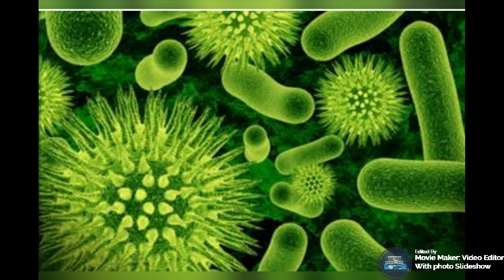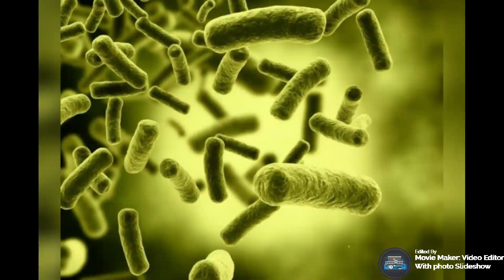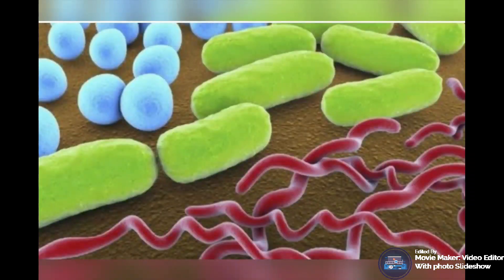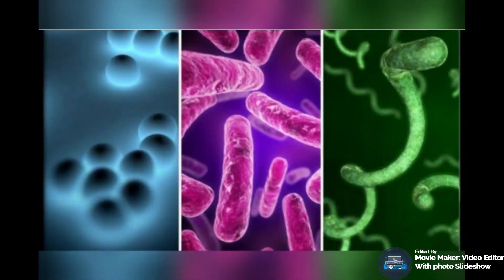The second group of fungi are mutualists, like mycorrhizal fungi, which colonize plant roots. Mycorrhizal fungi help to make phosphorus soluble and bring soil nutrients to plants. The third group are pathogens or parasites, which cause reduced production or death when they colonize roots and other organisms.